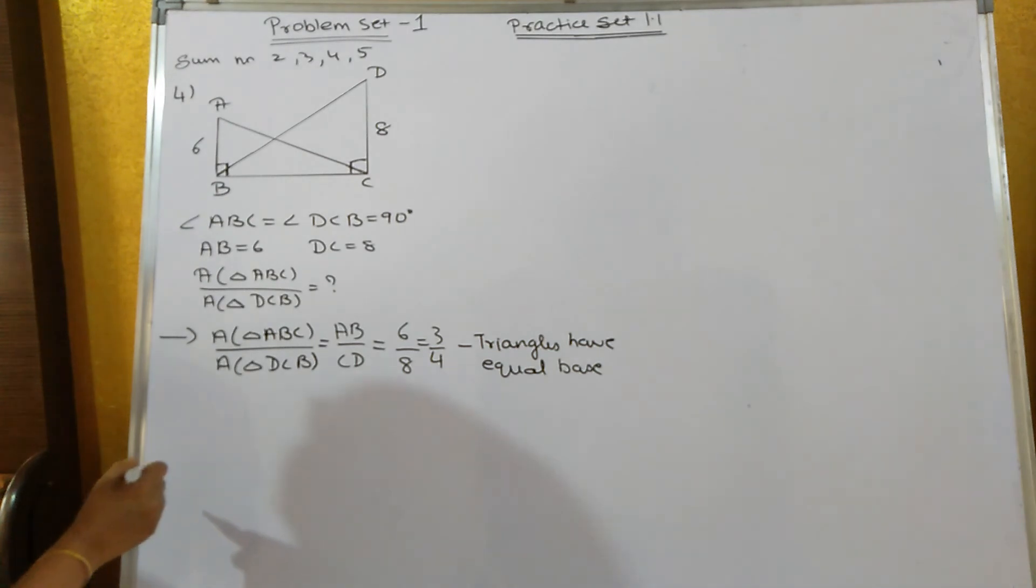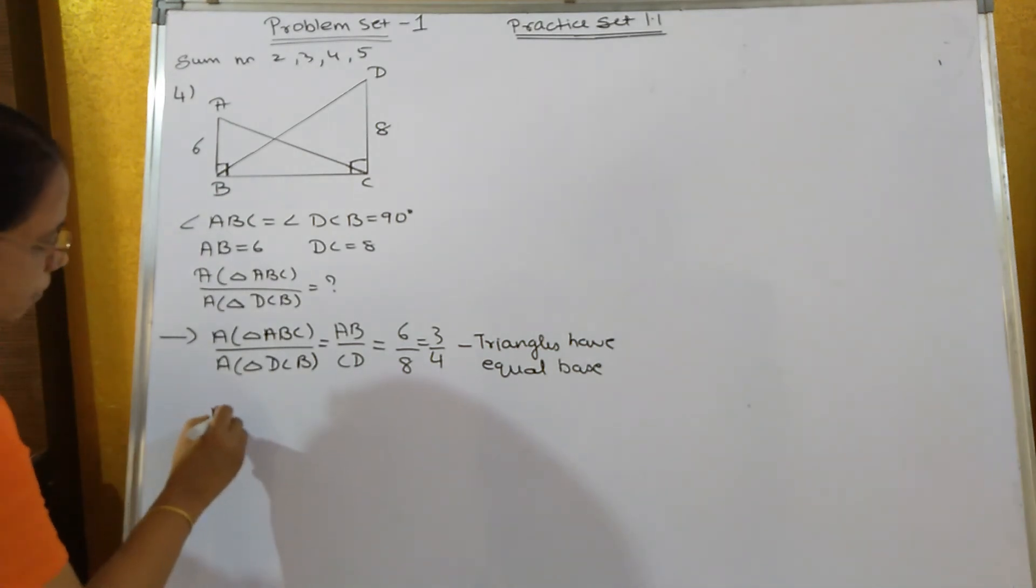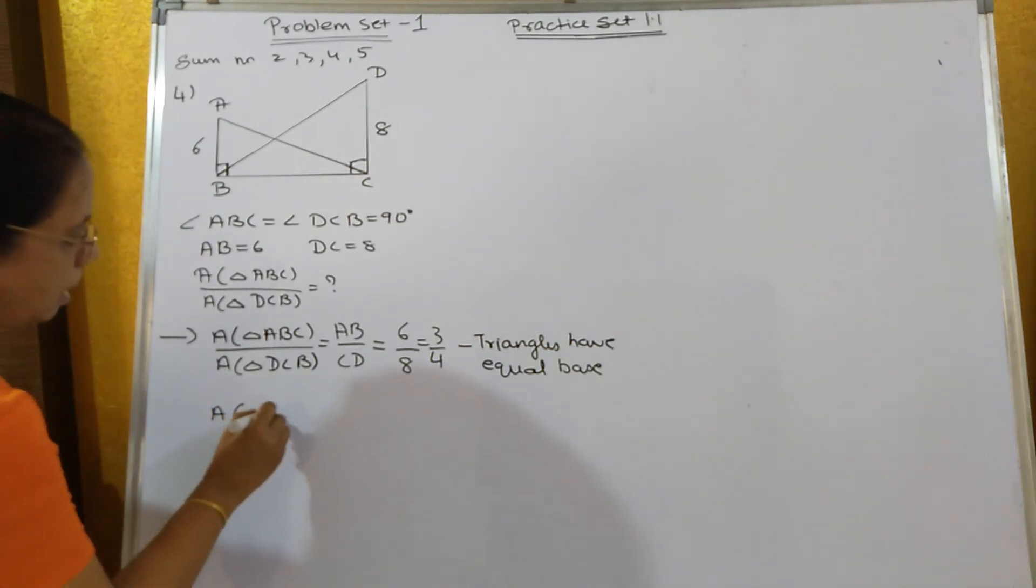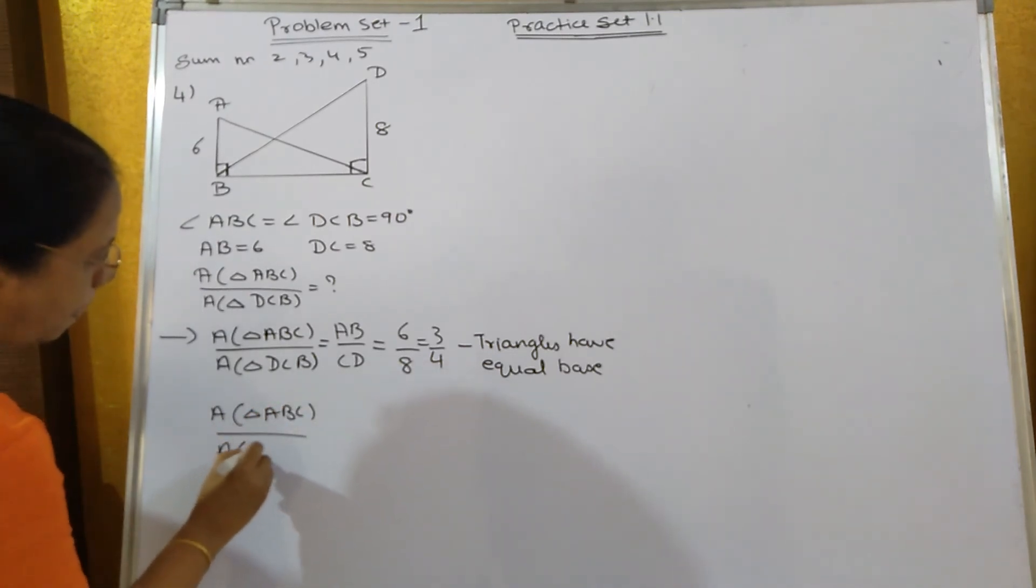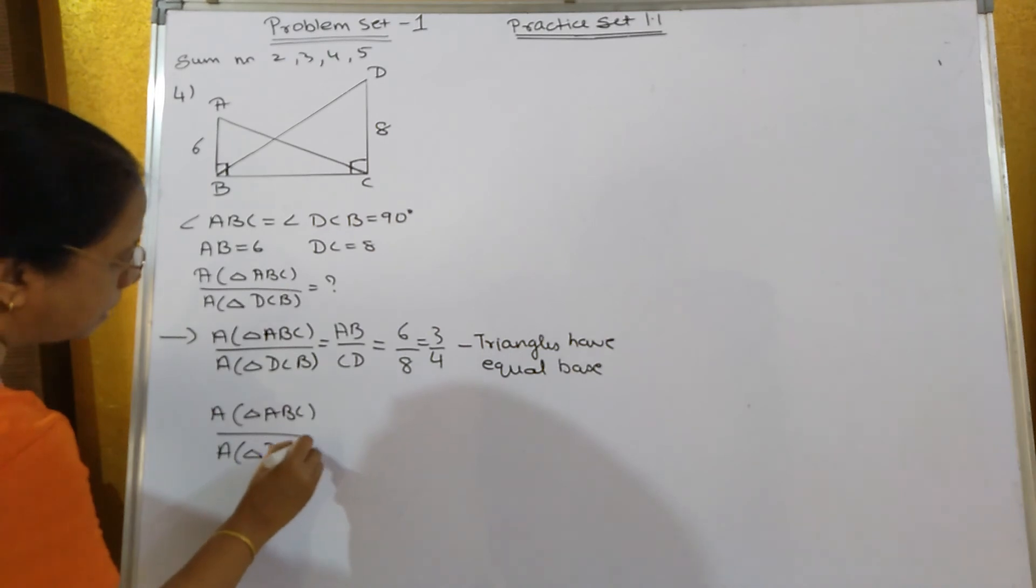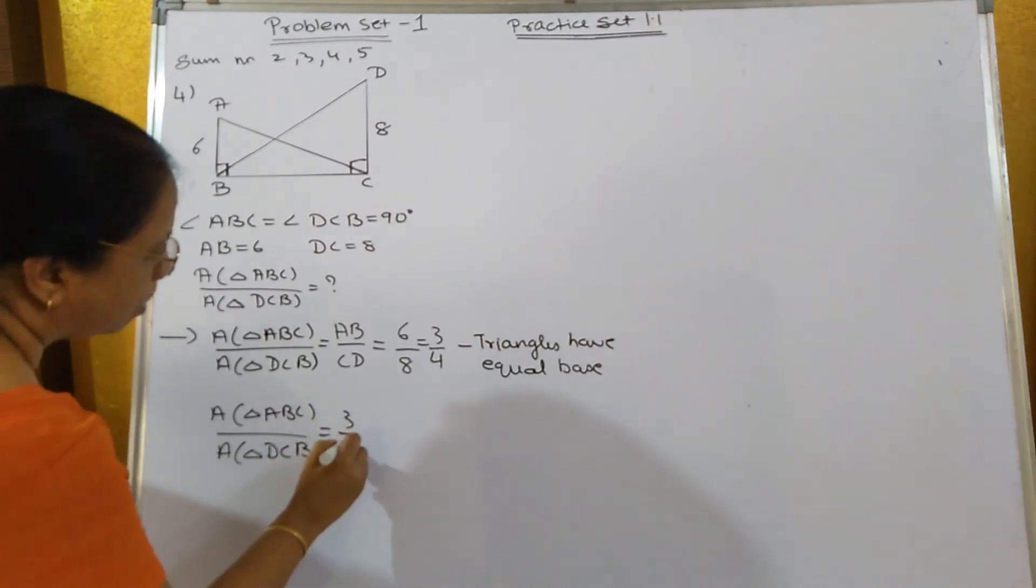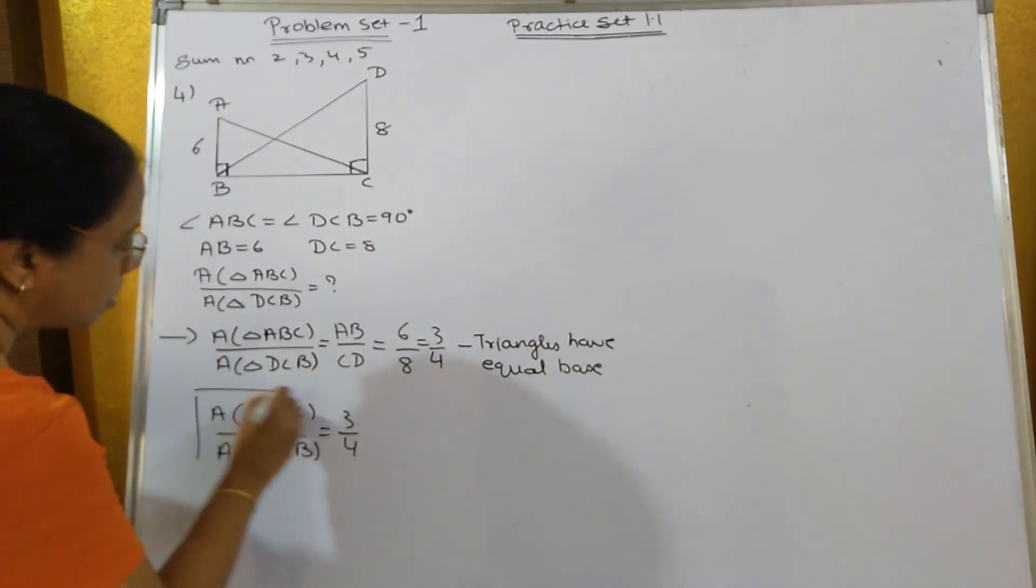So the answer is 3 upon 4. The area of triangle ABC to the area of triangle DCB is equal to 3 upon 4. This is your answer.